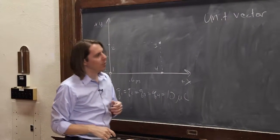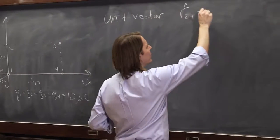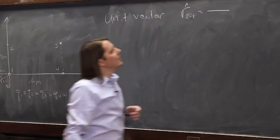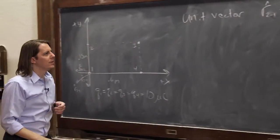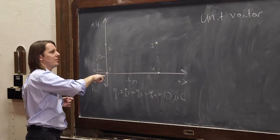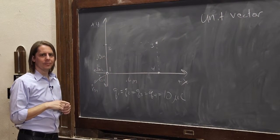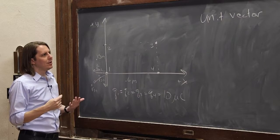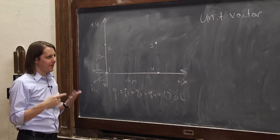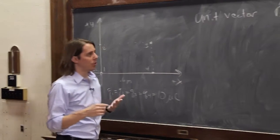Because what was r hat 2,1? It's a vector in the direction along this axis. It has a magnitude of 1. So let's think, how would we make that? Well, we need yet another vector. We need the vector r 2,1.